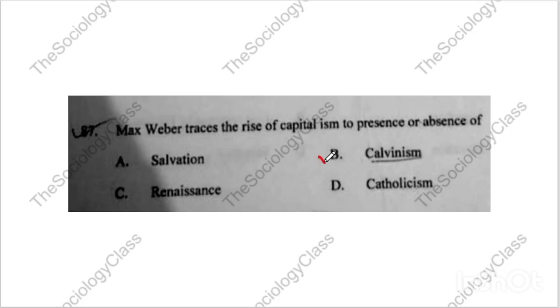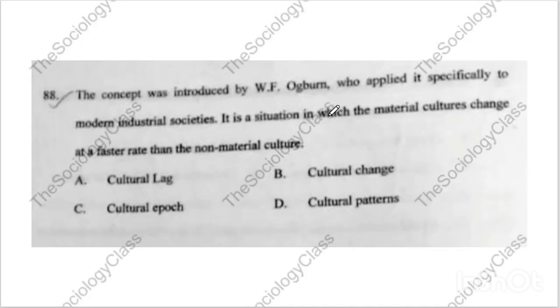Question number eighty-seven — the correct answer is B — Calvinism. Question number eighty-eight: 'The concept was introduced by Ogburn.' What concept did Ogburn give? It is cultural lag.